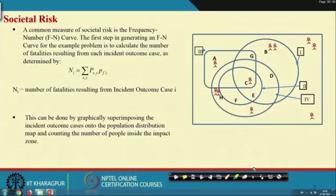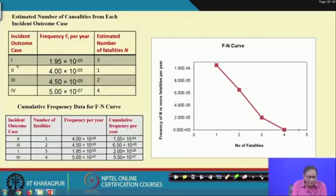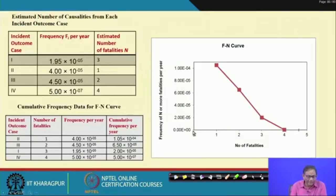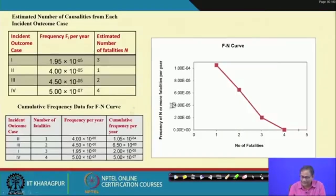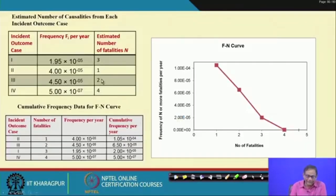Number of people exposed to impact zone 1 is 3; to impact zone 2 is 1; to impact zone 3 is 2; to impact zone 4 is 4. There is no calculation mistake here. The frequency per year for each incident outcome has already been determined. So we now have: number of fatalities and frequency per year for each scenario.